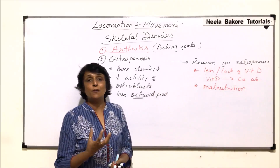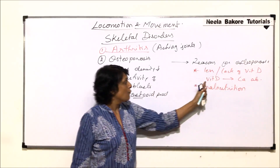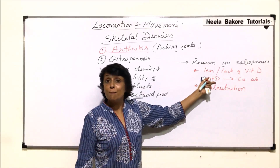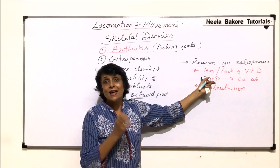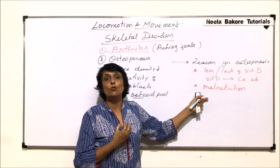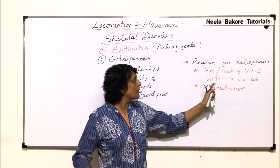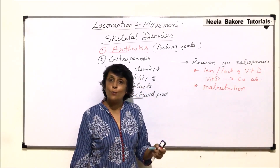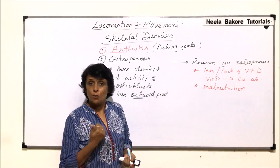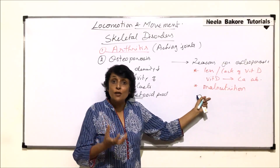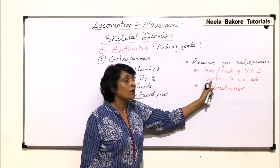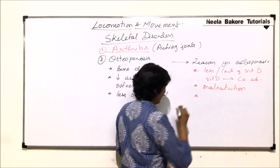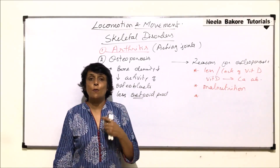Vitamin D can be synthesized in our body in the presence of UV rays from the sun, but the raw materials — some kinds of steroids or lipids — are required in the body. So those lipids in presence of sunlight are converted into vitamin D. Second, we need calcium, which can be absorbed with the help of vitamin D. So diet should be rich in calcium salts and there should be sufficient fat or lipid as a raw material for vitamin D synthesis. Malnutrition can therefore also be a reason.